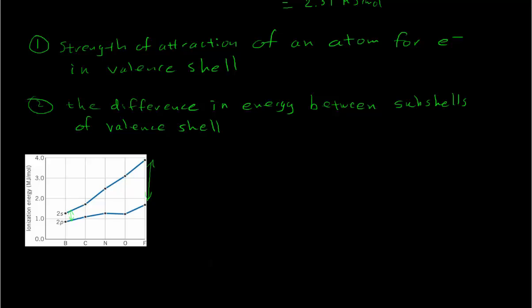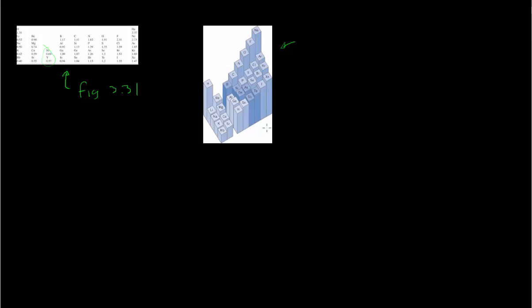Let's look at the periodic trends in AVEE. This table — corresponding to figure 3.31 in your textbook — shows the average valence electron energies for various atoms in the periodic table, including one row of transition metals and the main group elements. Plotting those as a 3D bar graph, you can clearly see the trend: AVEE increases across a row of the periodic table and decreases down a column, generally speaking.